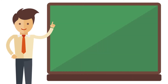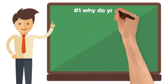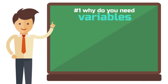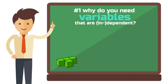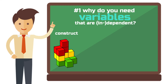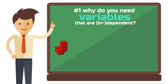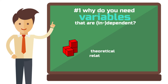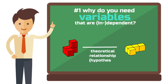Part 1: Why do you need independent and dependent variables? In a quantitative research design, your goal is to test a theoretical relationship. One of the building blocks of theory are constructs that consist of variables. In order to test a relationship, you must first determine the variables of a hypothesis and ensure that you can measure them.